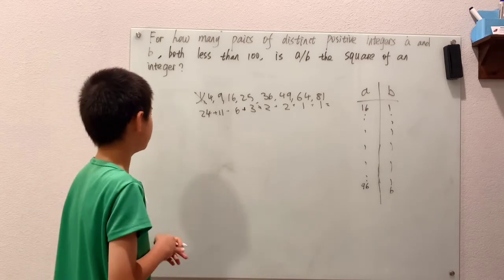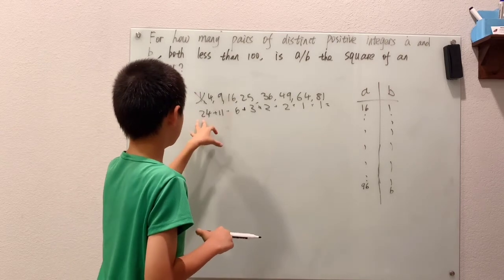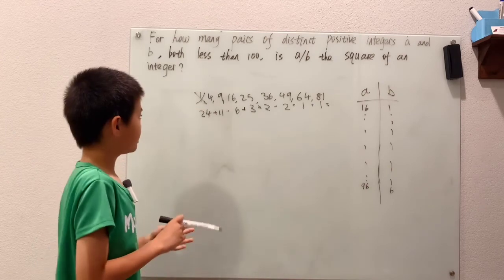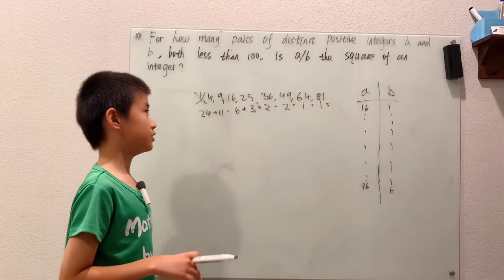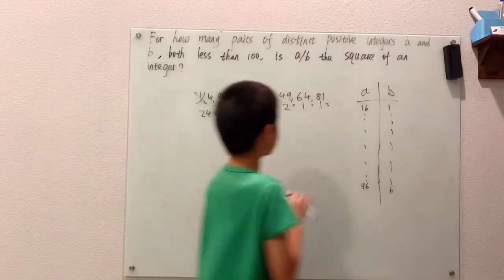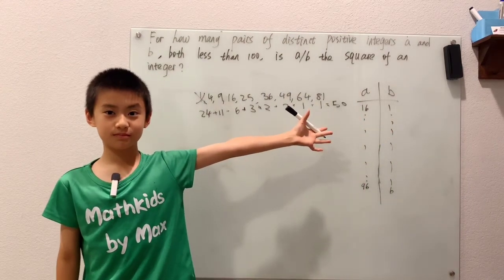Anyways, I can add these up. 24 and 11 is 35, plus 6, 41, plus 3, 44, plus 2 is 46, 48, and one is 2, which means you get an exact number of 50.